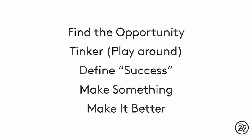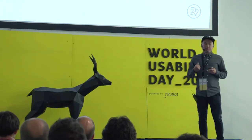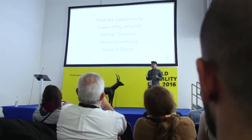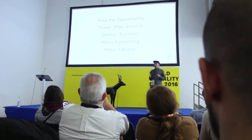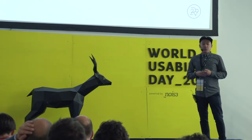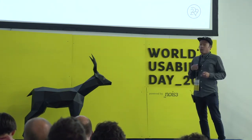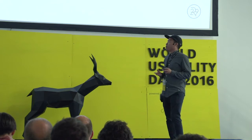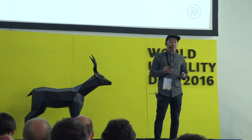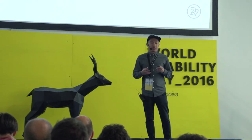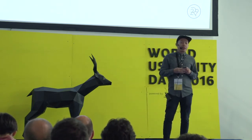Our process looked like this: first, find an opportunity — what is worth dedicating energy and resources to? After finding a direction, we tinkered and played around with no limits, just a designer and maybe one product person. Third, once we had an idea, we defined what success meant for the app. Then we actually made something, and afterwards — because design is never done — we maintained and iterated on it to make it better and more sustainable.